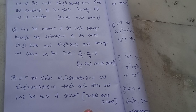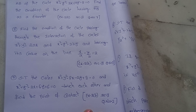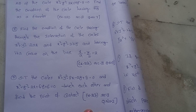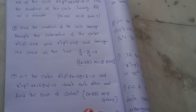Next, show that the circles x² + y² − 8x − 2y + 8 = 0 and x² + y² − 2x + 6y + 6 = 0 touch each other, and find the point of contact. This is Exercise 2A, Section 2A, Question 2.